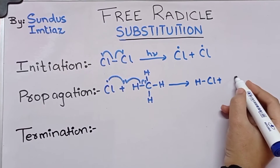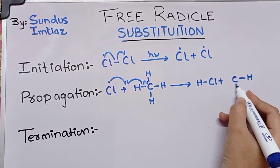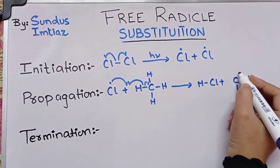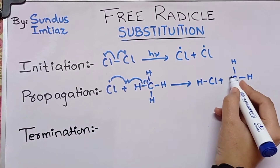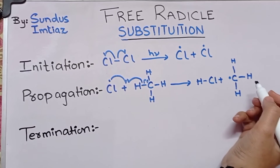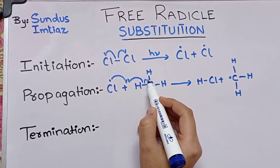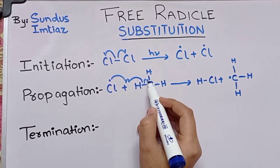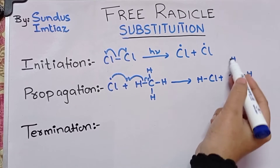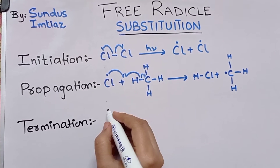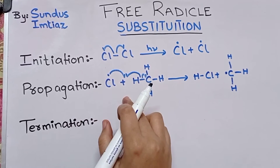This produces HCl plus CH₂H₃ and a free radical, because the unpaired electron moves towards the carbon atom. This is the alkyl free radical. Propagation means the chain reaction that continues until all the hydrogen is substituted with the halogen.